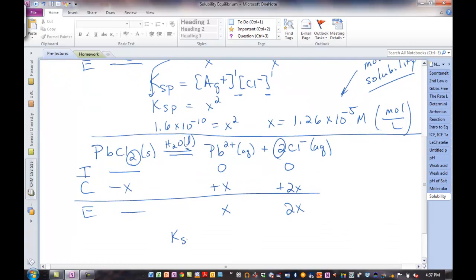So we write Ksp. And I'm going to write this out so we make sure to square it. Here's our product of the two products. Lead to the first power, chloride to the second power. Watch for that. So when we plug in, it's x times 2x squared, which is equal to 4x cubed. 2 squared is 4, x squared times x is x cubed.